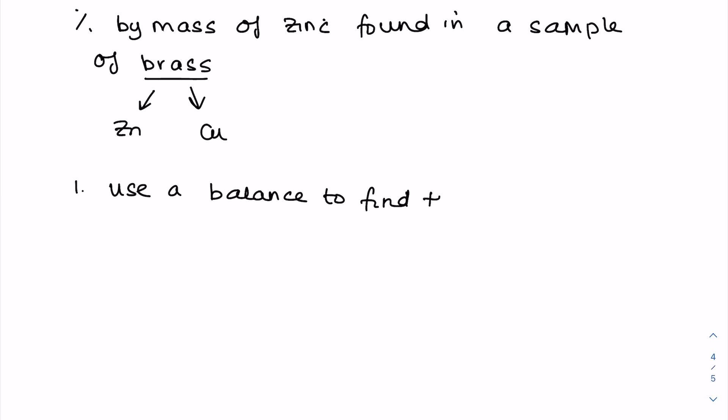Another experiment they like to ask you is about the percentage mass of a particular element in a substance. So what about the percentage by mass of zinc? We'll use this as our example, found in a sample of brass, which is an alloy made up of both zinc and copper. So we're interested in basically how much zinc is there in a sample of brass. So in your method you want to provide a way of finding the mass of brass. So use a balance to find the mass of brass.